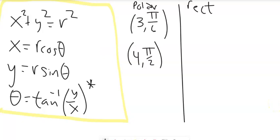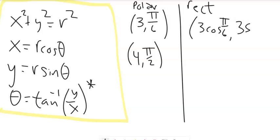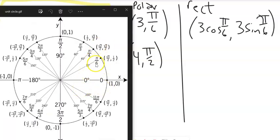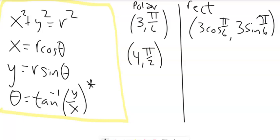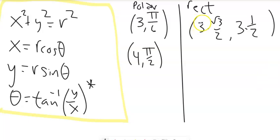For example, if I have the polar point (3, π/6) and want it in rectangular: x = 3·cos(π/6) and y = 3·sin(π/6). Cosine of π/6 is √3/2 and sine of π/6 is 1/2. So x = 3·(√3/2) = 3√3/2, and y = 3·(1/2) = 3/2.